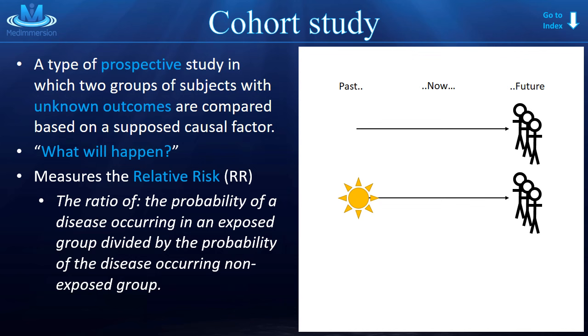The probability of a disease occurring in an exposed group divided by the probability of the disease occurring in a non-exposed group. So, how is the relative risk different than the odds ratio? Well, with the odds ratio, we're comparing two groups of people with known disease. For the relative risk, we're comparing two groups with known exposure. Having an exposure doesn't guarantee that you're going to get the disease.